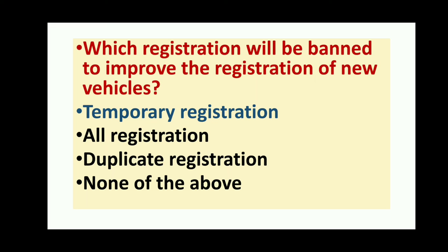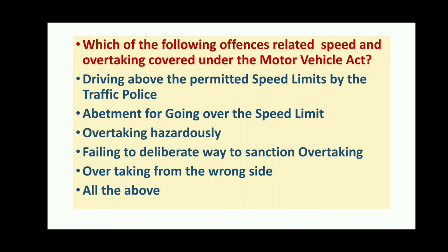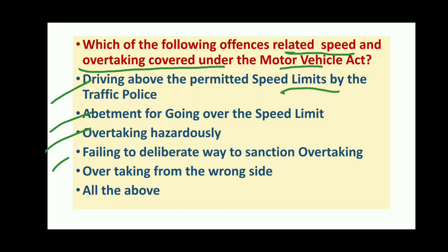Which registration will be banned to improve the registration of new vehicles? Temporary registration has been banned. Offenses related to speed and overtaking include driving above the permitted speed limit, abetment for going over the speed limit, overtaking in a hazardous manner, failing to wait for sanctioned overtaking, and overtaking from the wrong side. All the above are offenses related to speed and overtaking.